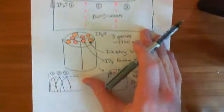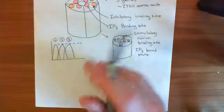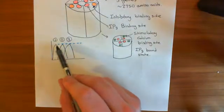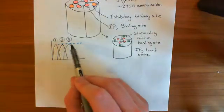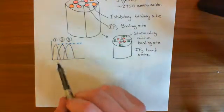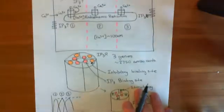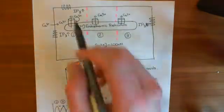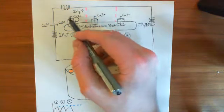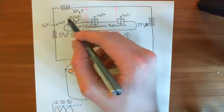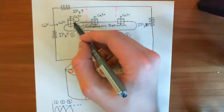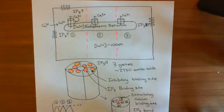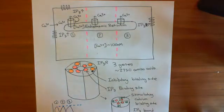What we're now trying to get our head around is why, when calcium goes up in one of the regions, it doesn't just stay high. Why does it go back down? What we do know is that if you have very high calcium concentrations in the vicinity of an IP3 receptor, it now does a negative feedback — it inhibits that IP3 receptor.